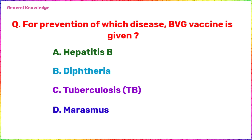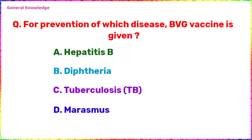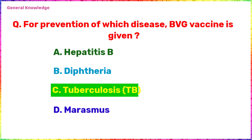For prevention of which disease is the BCG vaccine given? The correct answer is option C, tuberculosis.